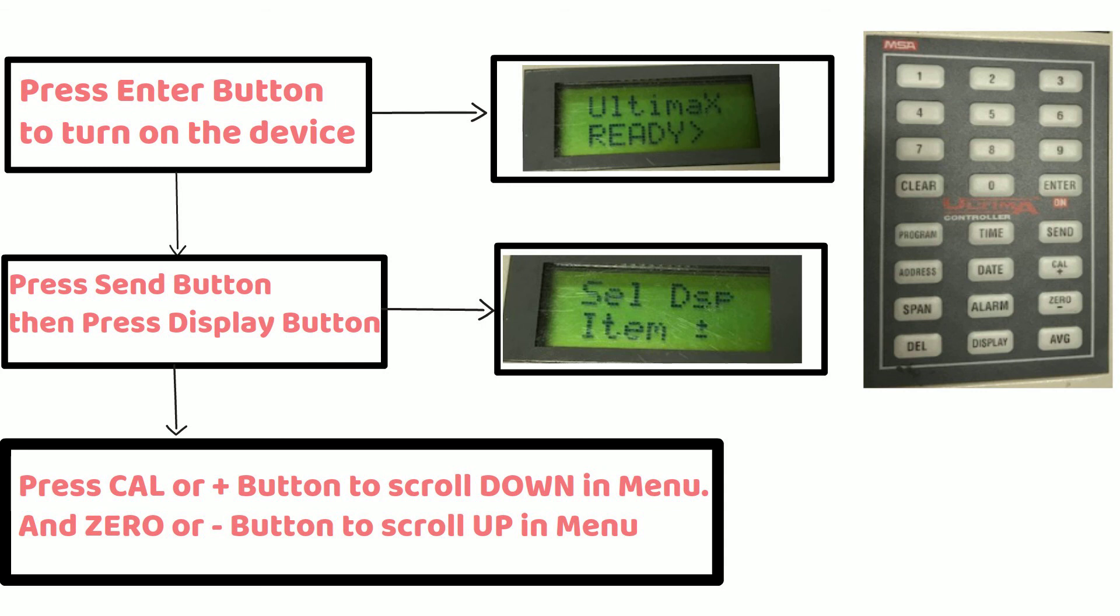When you press cal or plus button to scroll through menu, you can see different parameters such as current gas value, minimum gas reading, maximum gas reading, average gas reading, zero value, span value, alarm one set point and so on.